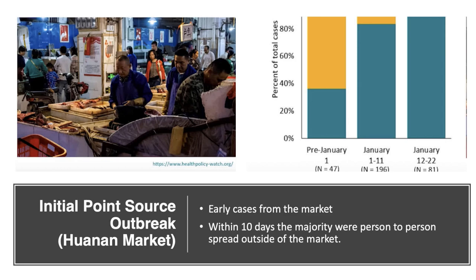The outbreak began as a point source in a Hunan live animal fish market, and the majority of cases were among market workers, depicted in yellow. However, within 10 days, the disease rapidly spread person to person to those who had not been in the market — the blue bars — demonstrating early on that this virus was highly infectious.